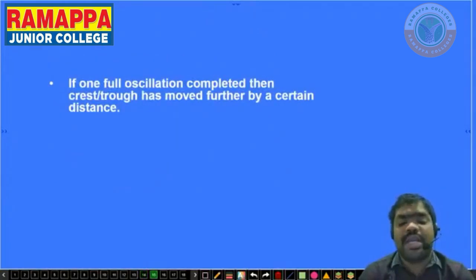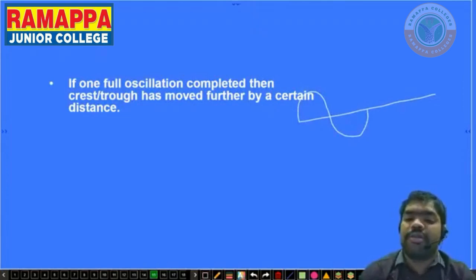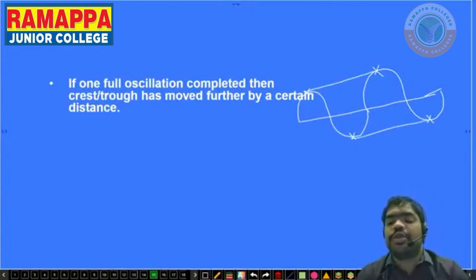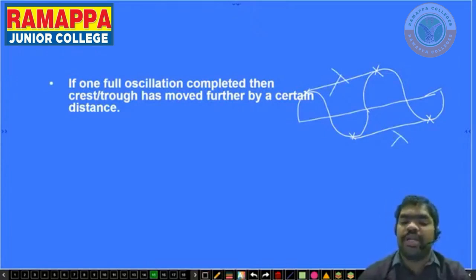In one full oscillation completed, the crest and trough have moved further by a certain distance. One crest and one trough together complete one full wave. The particles at crest and trough move to further positions, completing one oscillation.